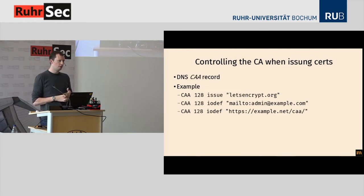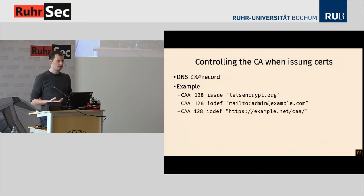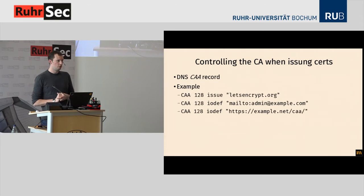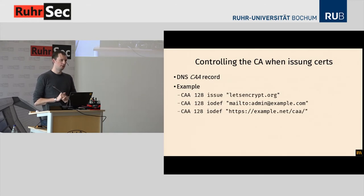One might think that's good enough for mistakes in CAs, but that still leaves the problem that CAs can technically still misbehave if there's a bug in their CAA code or if they are compromised. On the upside, CAA is going to be mandatory starting — as far as I understand — September this year. So every CA that is widely trusted will have to implement this and have it running in September.